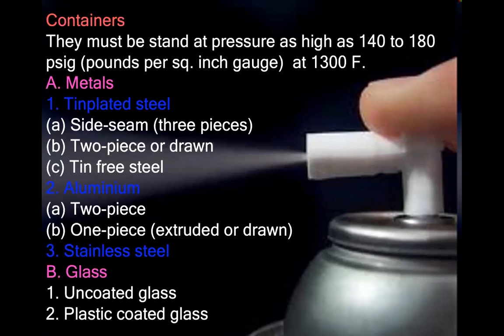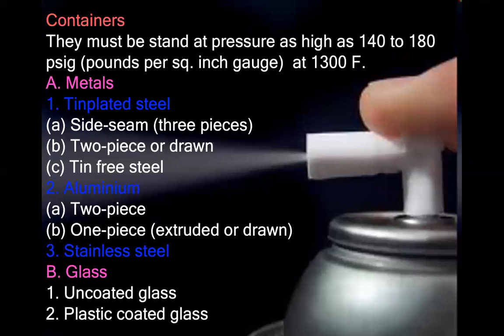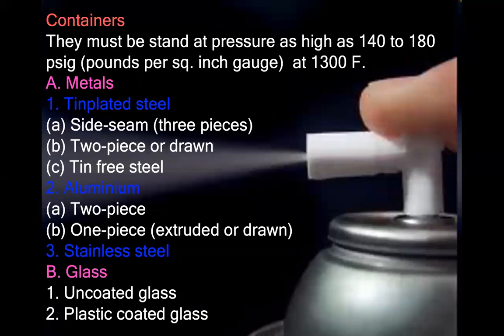Containers must withstand pressure as high as 140 to 180 pounds per square inch gauge at 130 degrees. Container types include metals such as tin-plated steel (side seam, three-piece, two-piece, or drawn), tin-free steel, aluminum (two-piece, one-piece extruded or drawn), stainless steel, and glass (uncoated glass or plastic-coated glass).